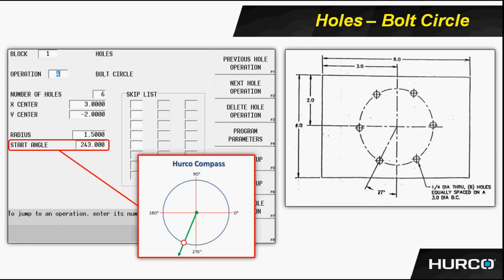Here we see a snapshot of the bolt circle tab. It's asking us how many holes are in the bolt circle. We have six in this particular print. It wants to know what is the X and Y center point of the bolt circle itself. We enter in the 3 inch and negative 2 inch values that we see on the print.